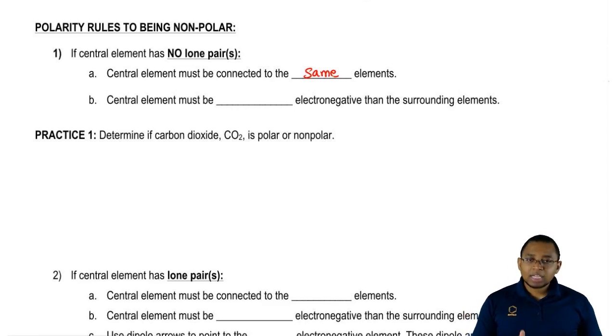Second rule: the central element must be less electronegative than the surrounding elements. If it breaks this rule, it's automatically polar. You have to follow both rules in order to be nonpolar.